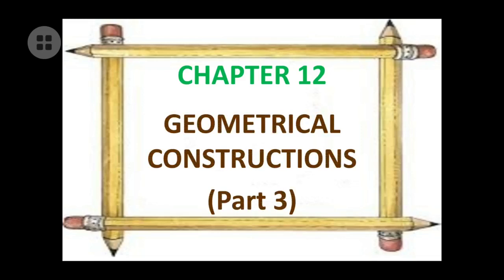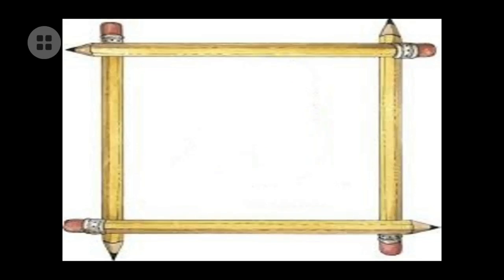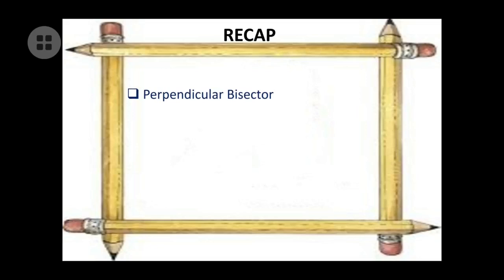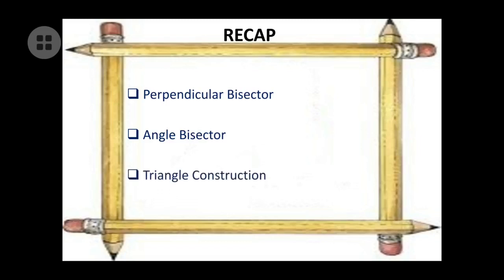Let's see what you learned till now. The first topic was about the perpendicular bisector — a line which cuts another line into two equal parts and makes a 90-degree angle. Then the angle bisector: bisector means it divides into two equal parts, so an angle bisector divides the angle into two equal parts.